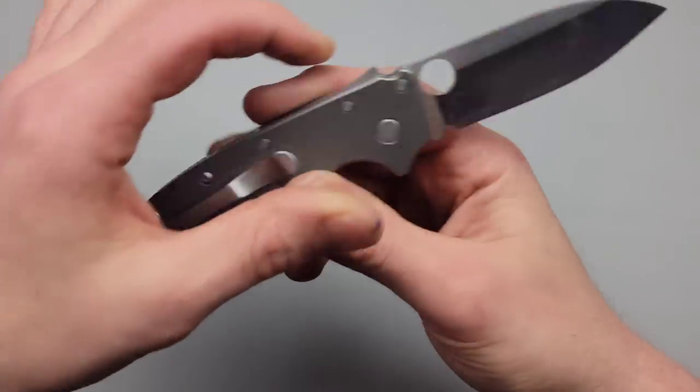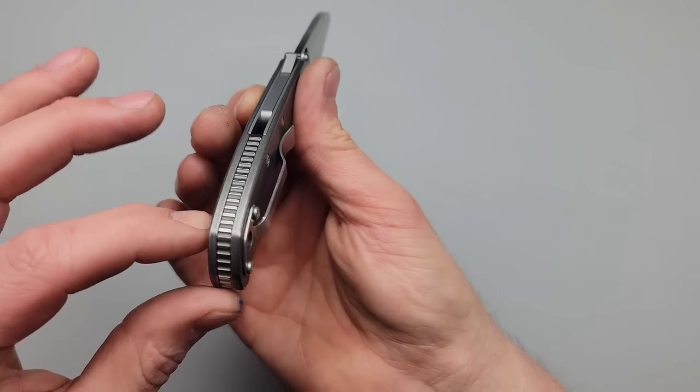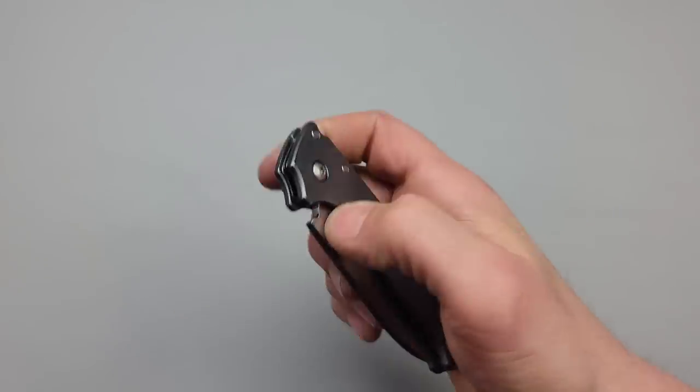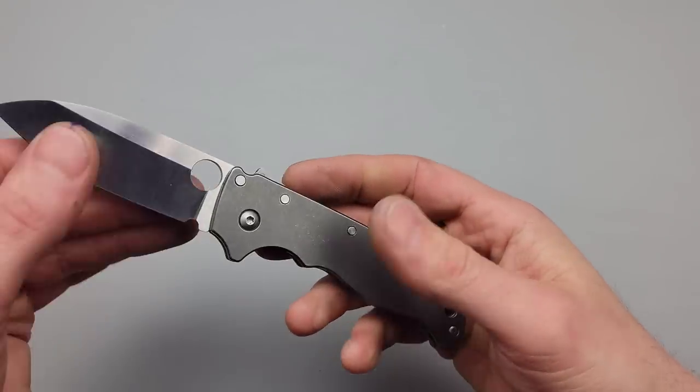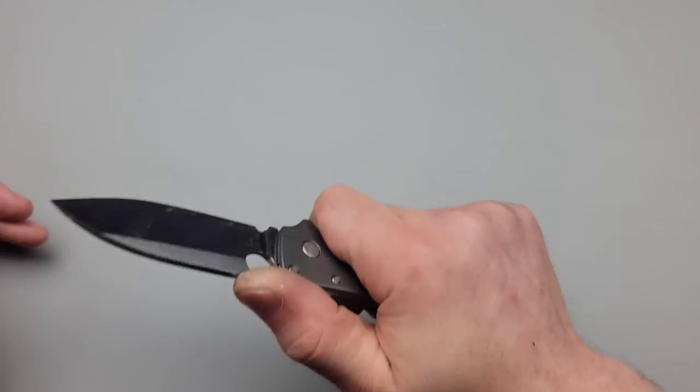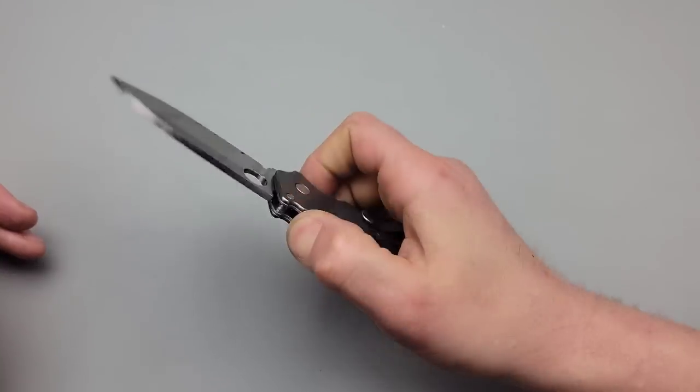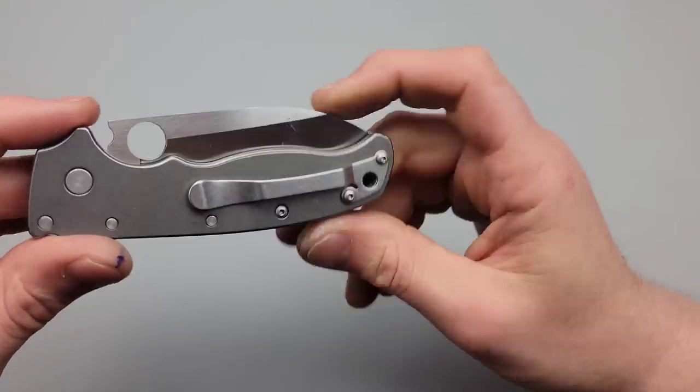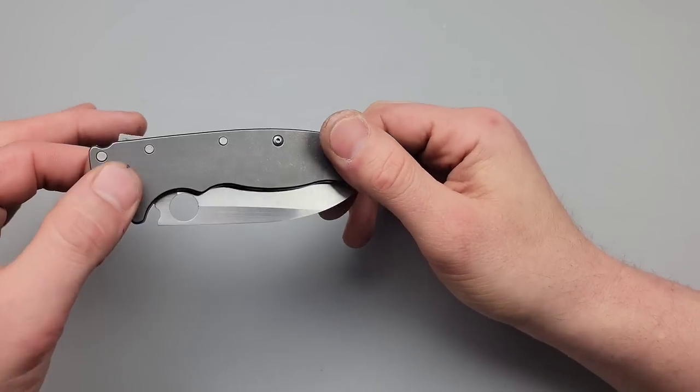The original GOAT titanium scales and backspacer. Everything will be linked below. Discount code 15% off for you guys. Man these are really nice titanium scales and I really like the aluminum ones. Don't get me wrong but this massively improves this knife.